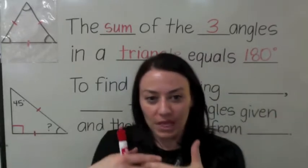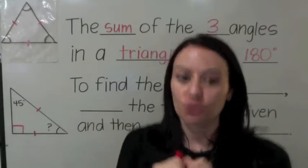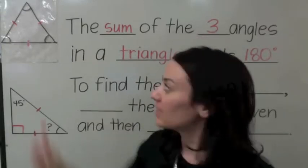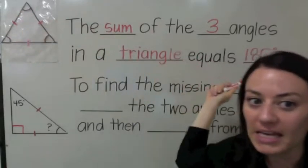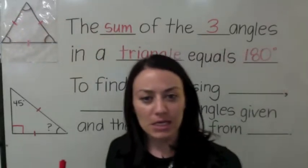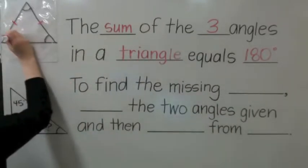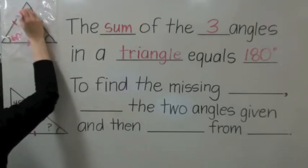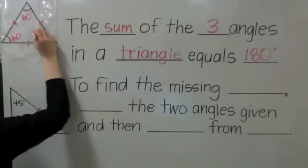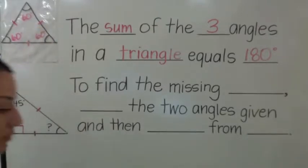In an equal angular triangle, if all angles are equal, we take 180 and divide by three. Each angle in an equal angular equilateral triangle is 60 degrees. So each one is 60. That's really important to remember.